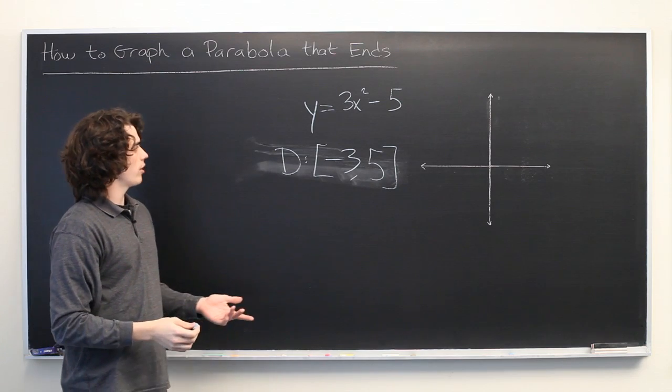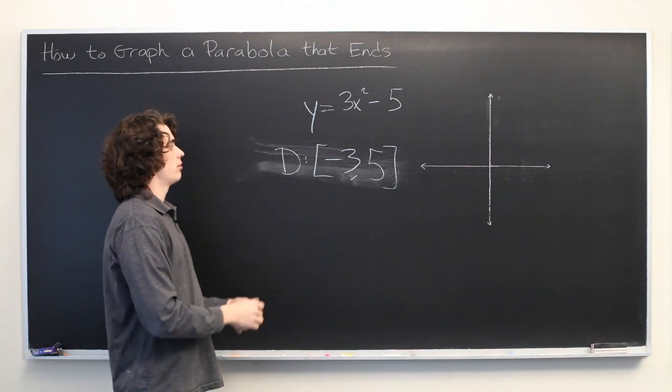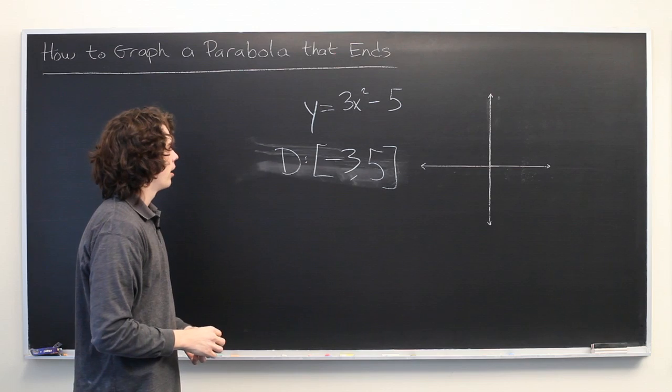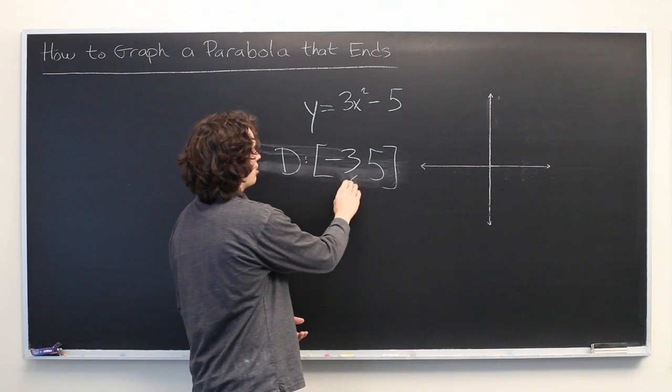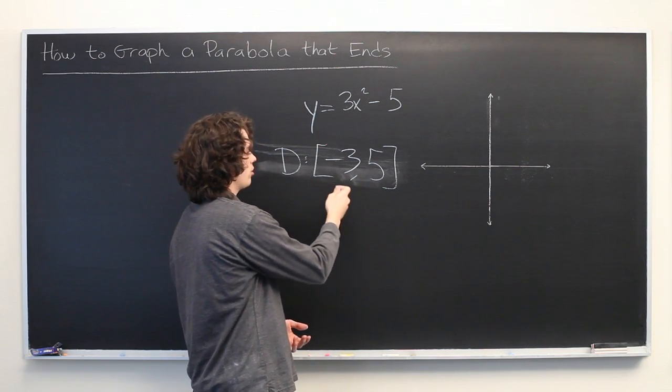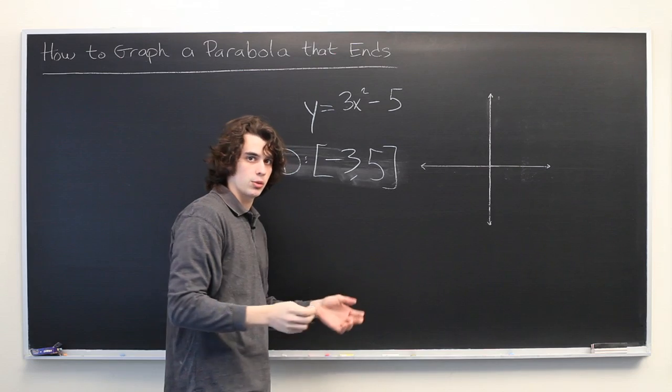Well, graphing this is essentially no different than graphing a parabola that is defined on all real numbers. We simply start plugging in some values that lie in this range, and then connect the dots as we always do.